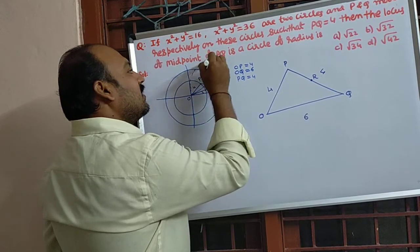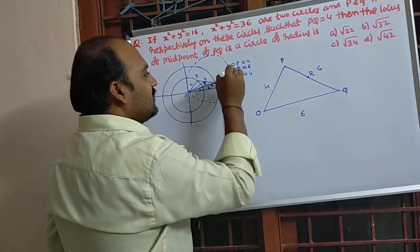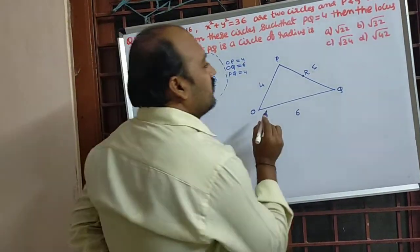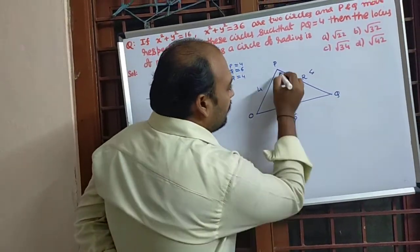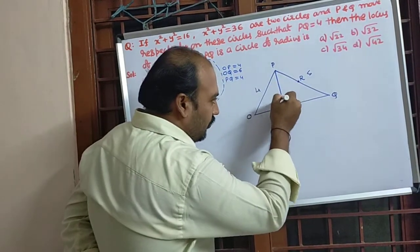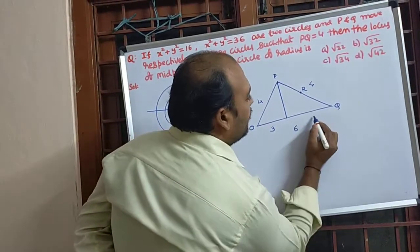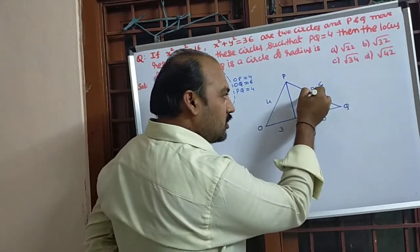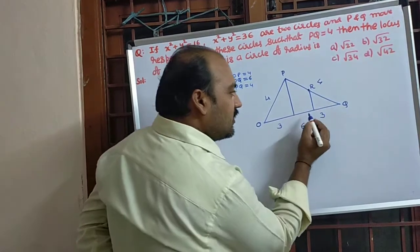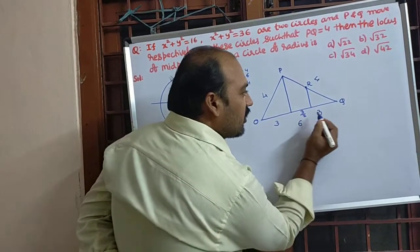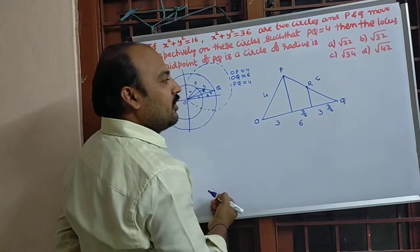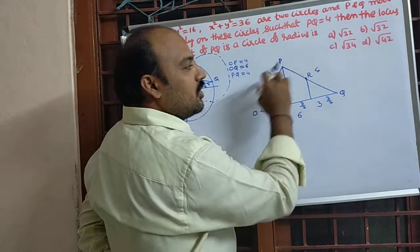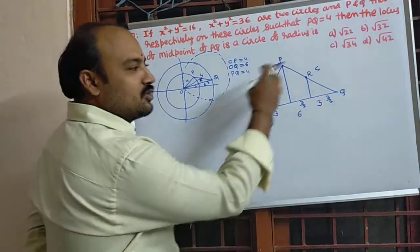This locus, this circle radius we are going to calculate now. This dotted circle radius I am going to calculate. So here, draw one perpendicular from point P to this one. Here 3 units, here 3 units. R is the midpoint of PQ. From R also you draw one perpendicular. This is 3/2, this is also 3/2. OP and PQ both are equal values, so it is isosceles triangle.